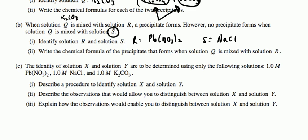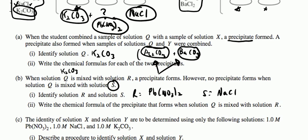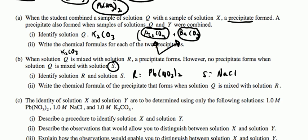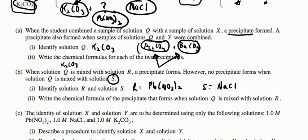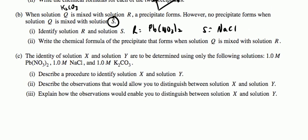Then it says the identity of solution X and solution Y are to be determined using only the following solutions: 1.0 M Pb(NO3)2, 1.0 M NaCl, and 1.0 M K2CO3. Now, we know that those are QR and S. So, describe a procedure to identify X and Y. So, if you add NaCl to AgNO3, it will form a silver precipitate. And if you add NaCl to BaCl2, no precipitate is formed. So, here's how we're going to do it.